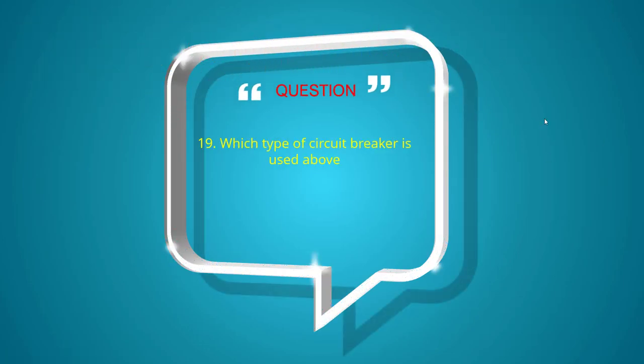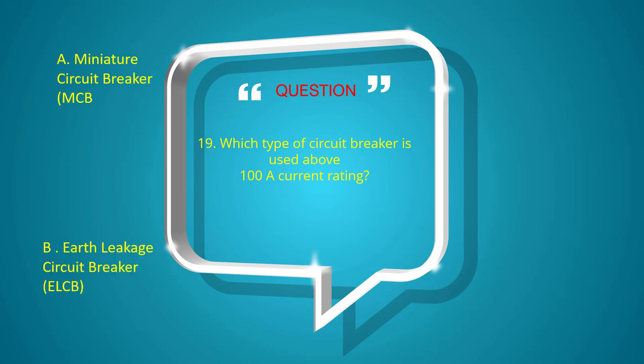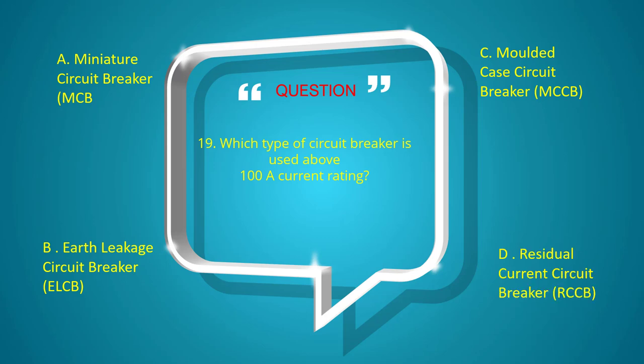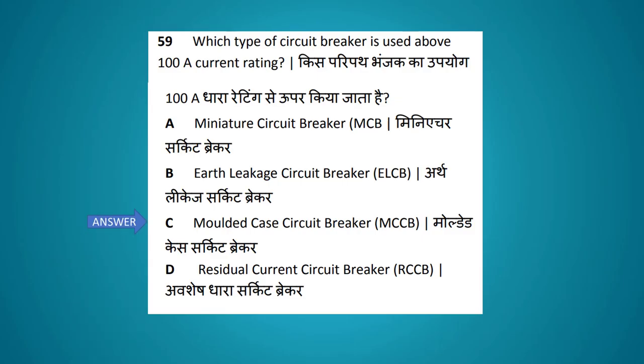Which type of circuit breaker is used above 100 amps current rating? Options: miniature circuit breaker, earth leakage circuit breaker, molded case circuit breaker, residual current circuit breaker. The answer is molded case circuit breaker.